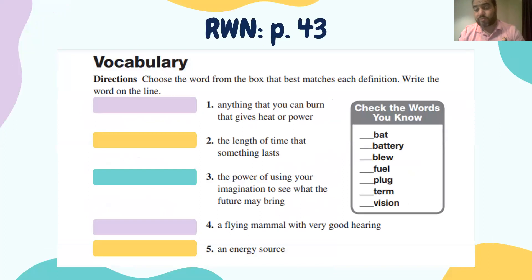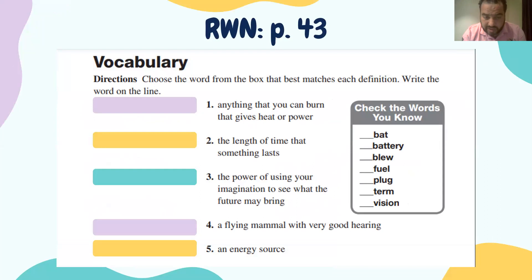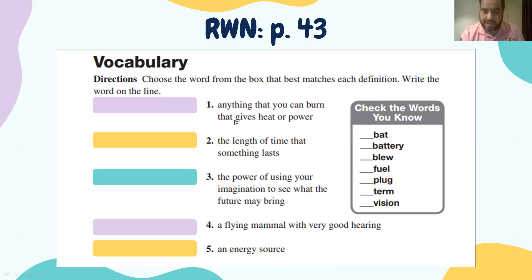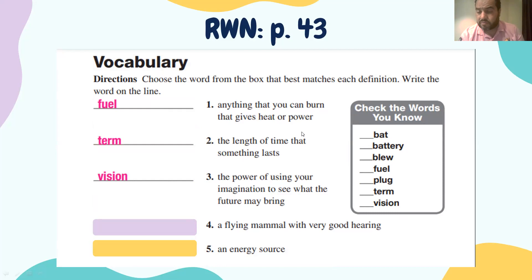We move to page 43, where you are going to practice answering some questions related to your vocabulary. Choose the word from the box on the right that matches each definition on the left, and write the word on the line. There are five definitions and seven words in the box, so you will have two extra words. Pause the video, answer everything, then the answers will show up on the screen. Here is the practice for the words we have already studied.